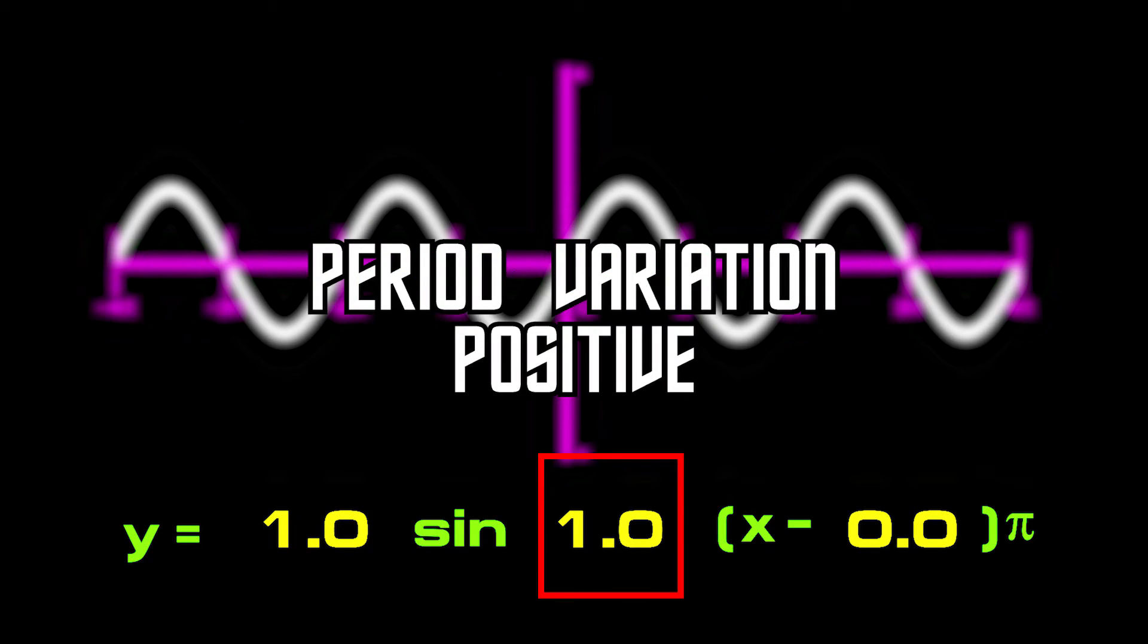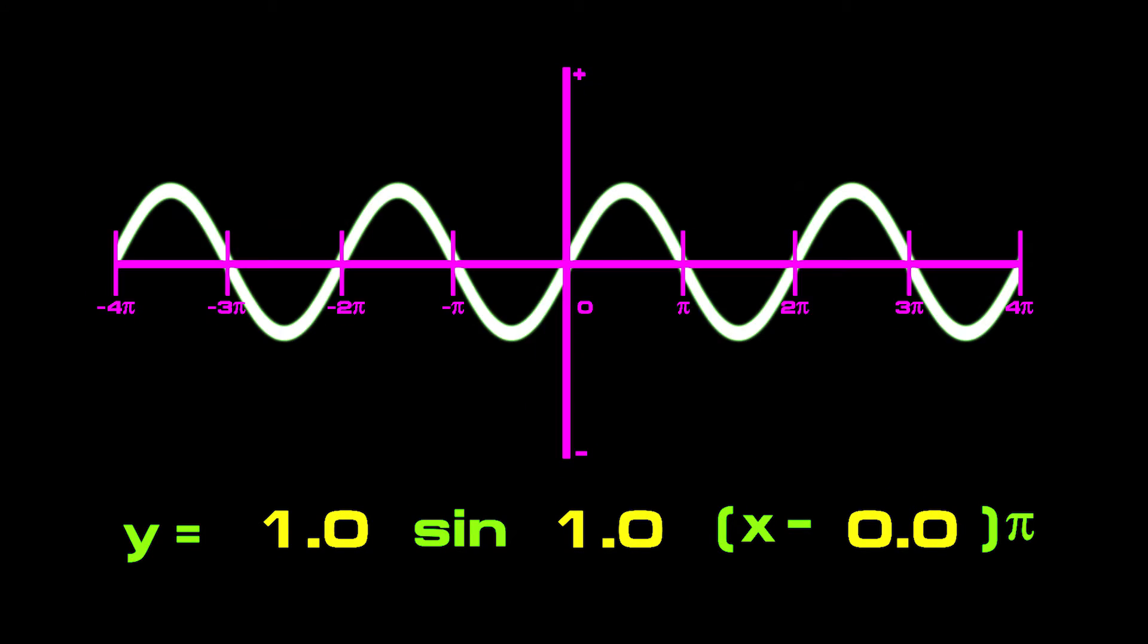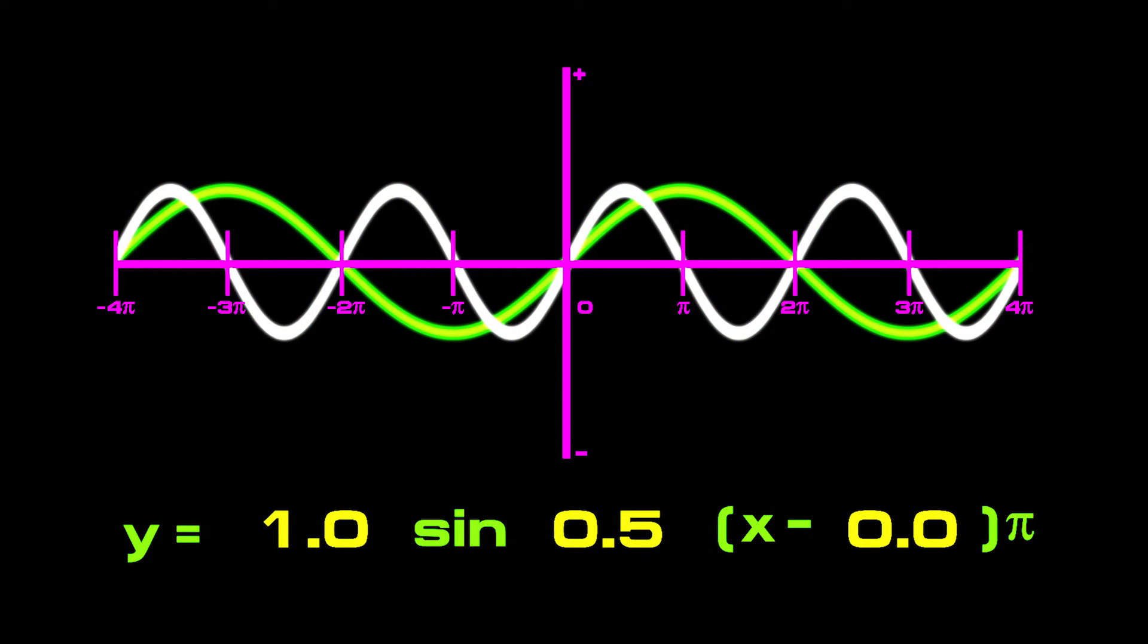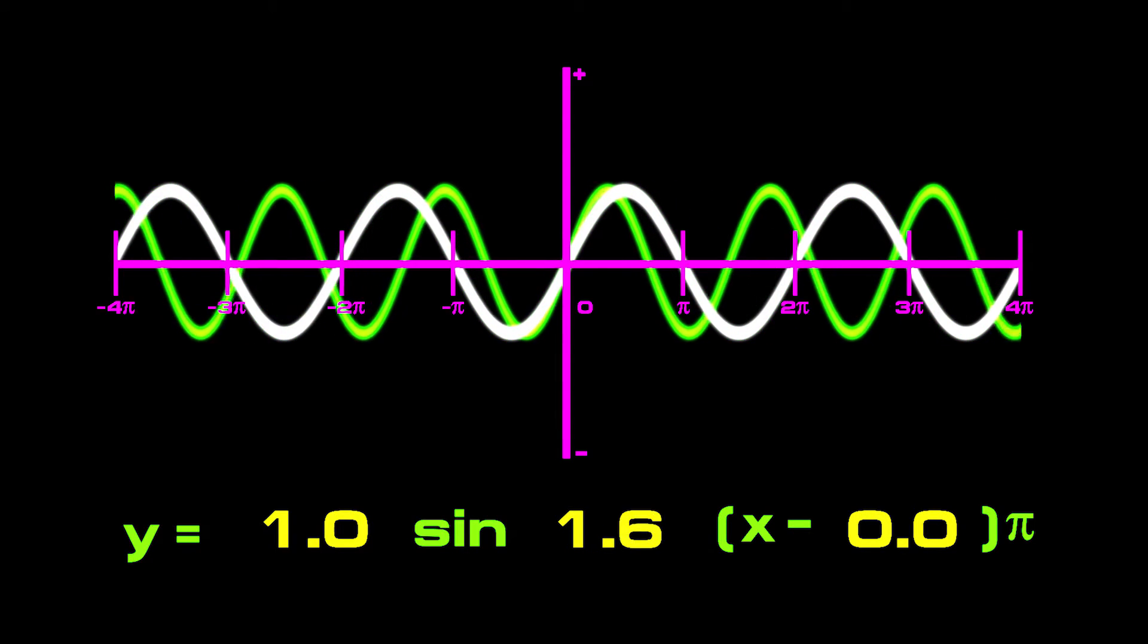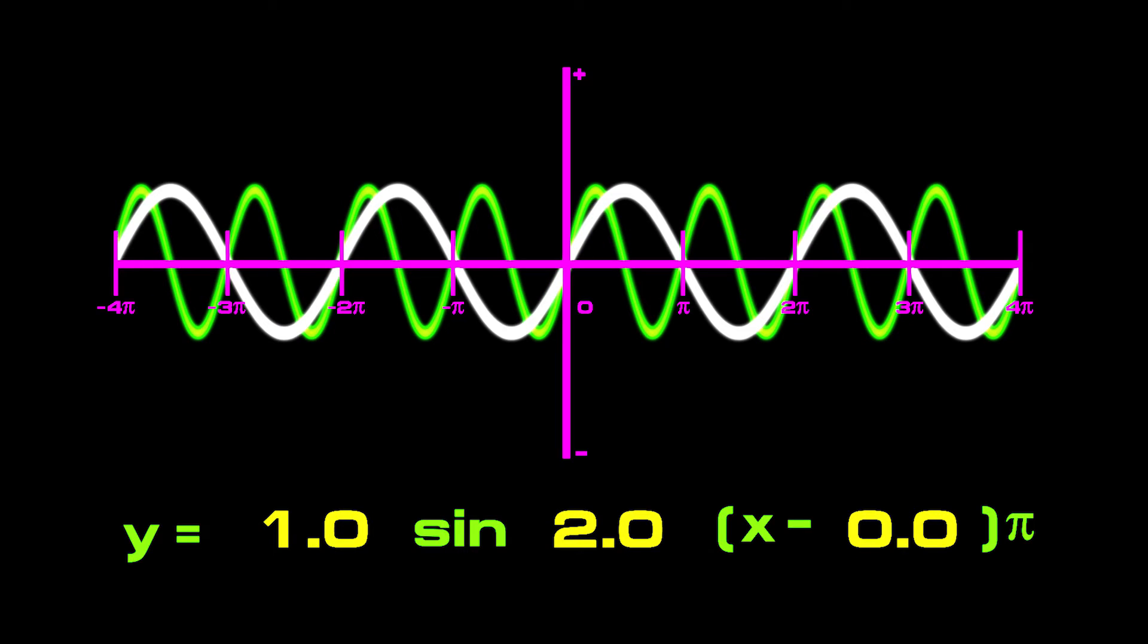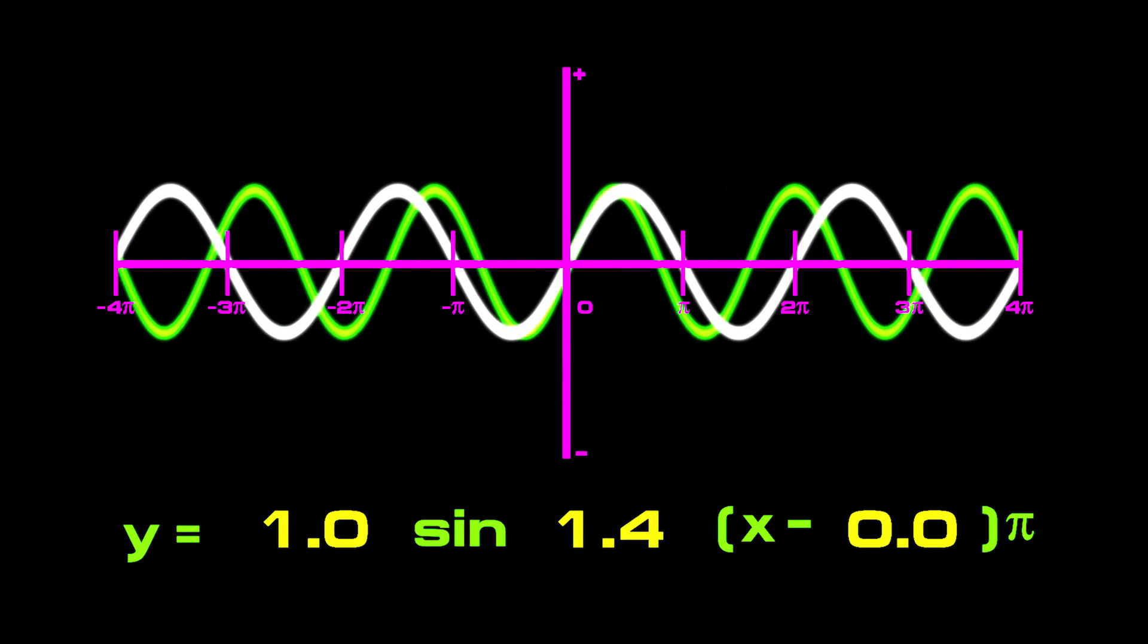Next, we look at varying the period with positive values by modifying b, which is inversely proportional to the period. You can see that varying b less than a value of one stretches out the waveform and decreases the frequency. While a b value greater than one squeezes the waveform together, increasing the frequency. Again, but faster.